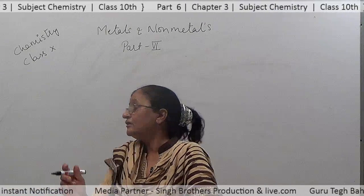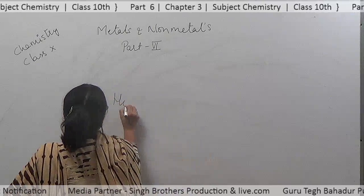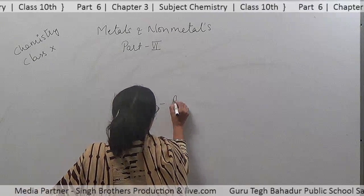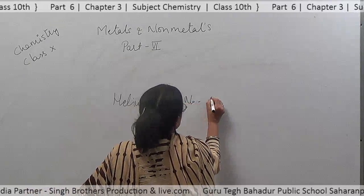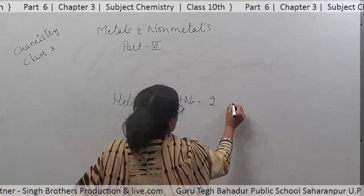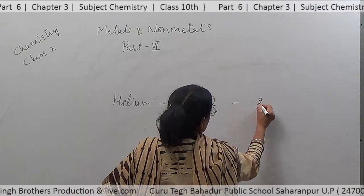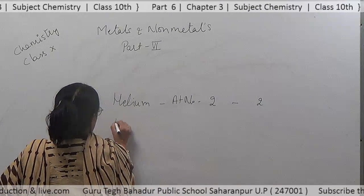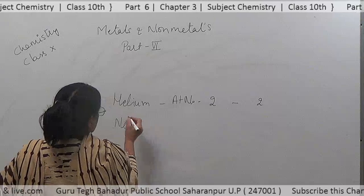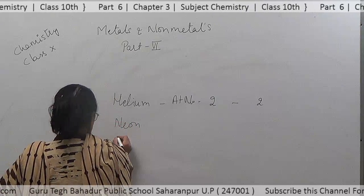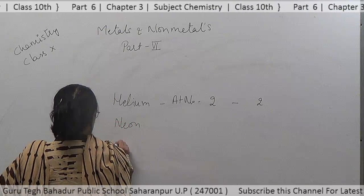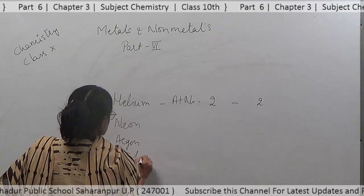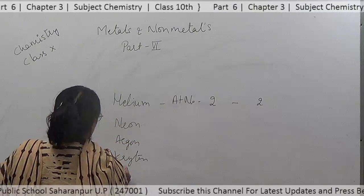For example, noble gases like helium have atomic number 2, so it has two electrons in the outermost orbit. Other noble gases include neon, argon, krypton, xenon, and radon.